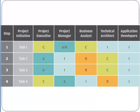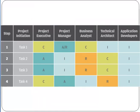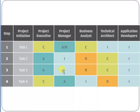Now let me show you a good example of a RACI matrix. For example, under Project Initiation there are tasks: Task 1, Task 2, Task 3, Task 4. The Project Executive is Consulted for Task 1 and Accountable for Task 2. The Project Manager is Informed for Task 2 and Task 3, but Accountable for Task 4 — meaning they must answer if anything goes wrong. The Business Analyst is Consulted for Task 1, Responsible for Tasks 2 and 3, and Informed for Task 4.